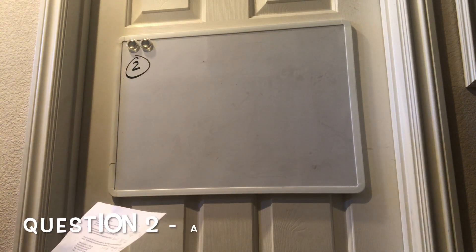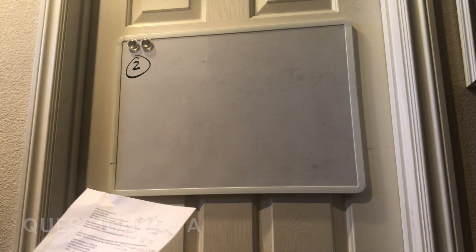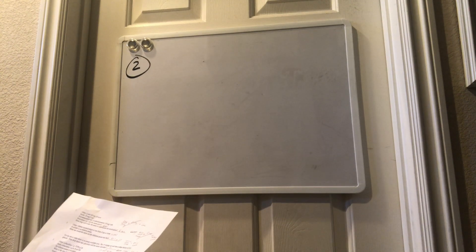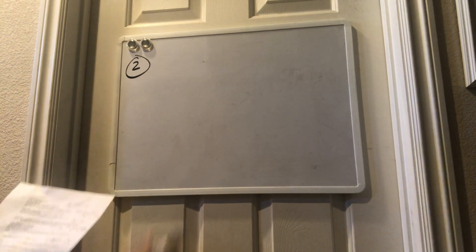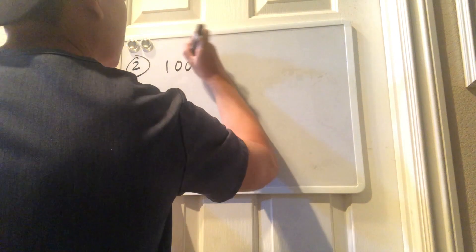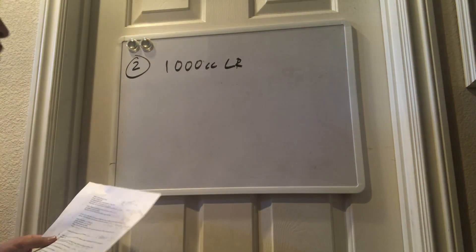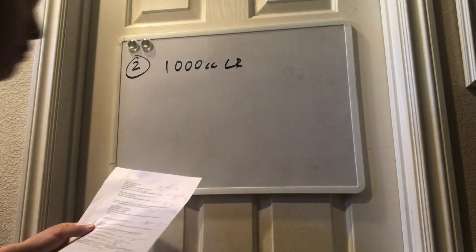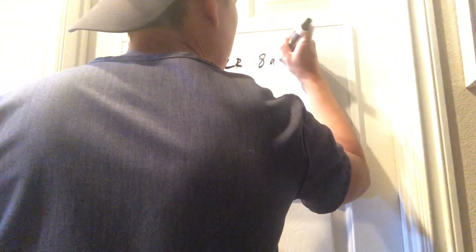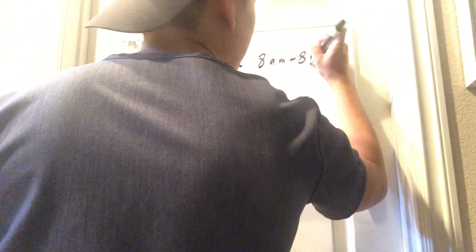The second question asks you, what rate would the nurse set the infusion pump at mLs or cc's per hour? The order you're given is 1,000 cc's of LR, lactated ringers, and you're going to run it from 8 a.m. to 8 p.m.